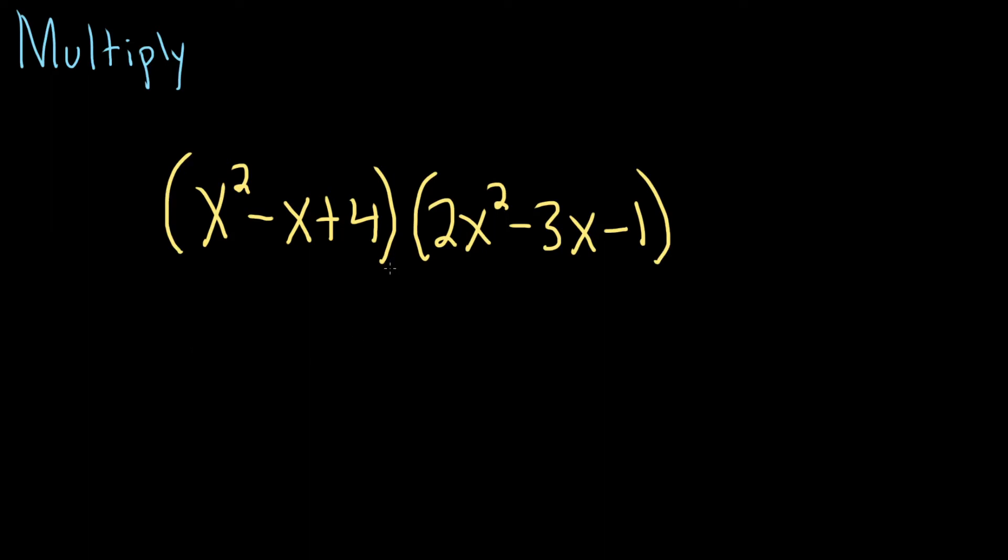In this problem, we're going to multiply these polynomials. We have a trinomial times a trinomial. It's called a trinomial because they each have three terms.